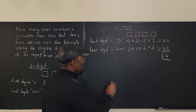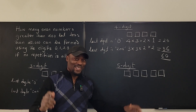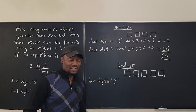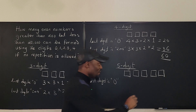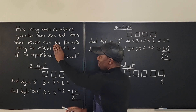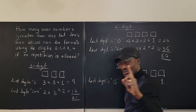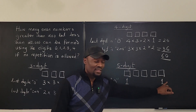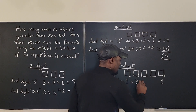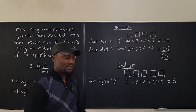Now five-digit numbers. Remember the condition: the number must be less than 20,000. Case one: last digit is zero — one option. After fixing zero at the end, the first digit can only be one — otherwise the number would exceed 20,000 — so one option there. The remaining three middle positions have three, two, and one option respectively: 1 × 1 × 3 × 2 × 1 = 6.